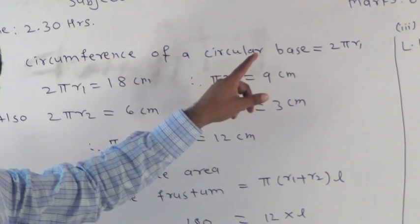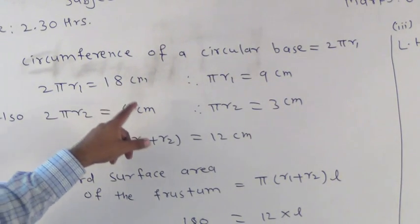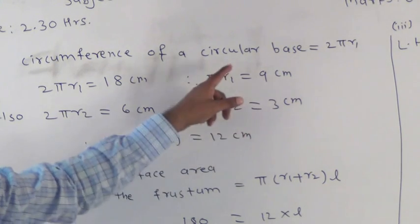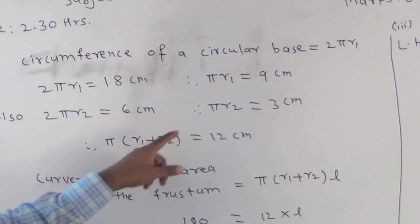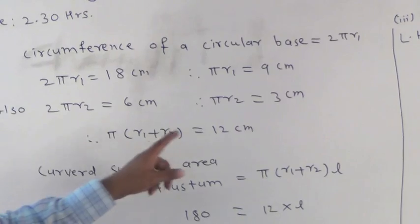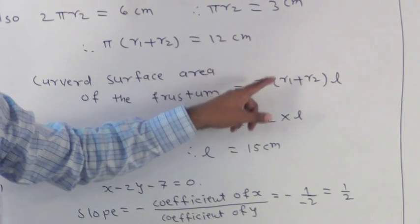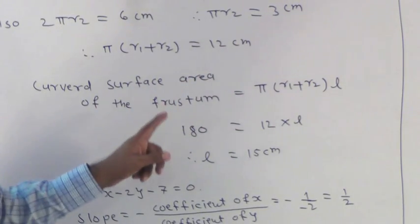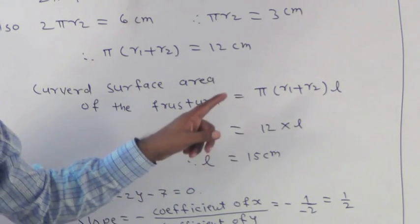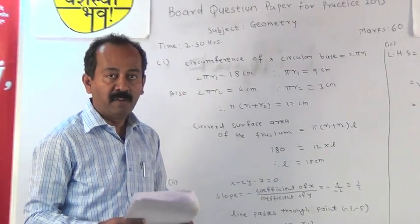Therefore, pi r1 is equal to 9 centimeter. Also, 2 pi r2 is equal to 6 centimeter. Therefore, pi r2 is equal to 3 centimeter. After adding these two, pi in bracket r1 plus r2 is equal to 12 centimeter. Now, formula is curved surface area of the frustum of a cone is equal to pi in bracket r1 plus r2 bracket complete into L. So, 180 is equal to 12 into L. Therefore, L is equal to 15 centimeter. So, slant height of the frustum is 15 centimeter.